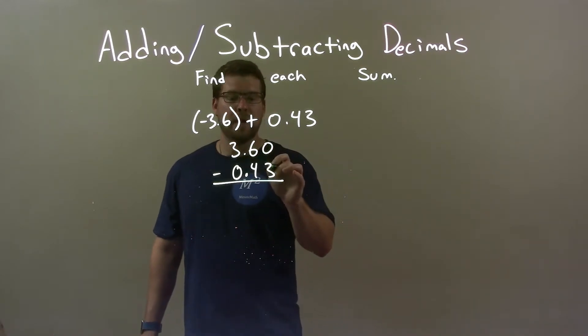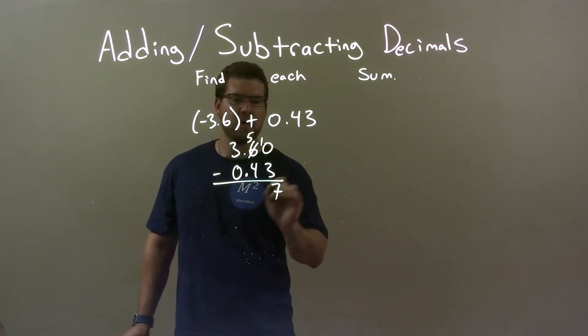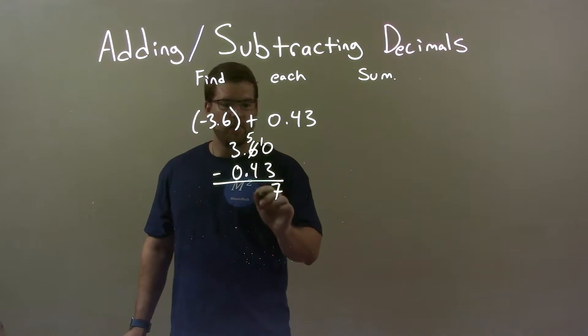Well, 0 minus 3 we cannot do, so we take 1 from the 6, make that a 5, and put a 1 up there. Now we have 10 minus 3, which is 7. Then 5 minus 4, which is 1, decimal place here.